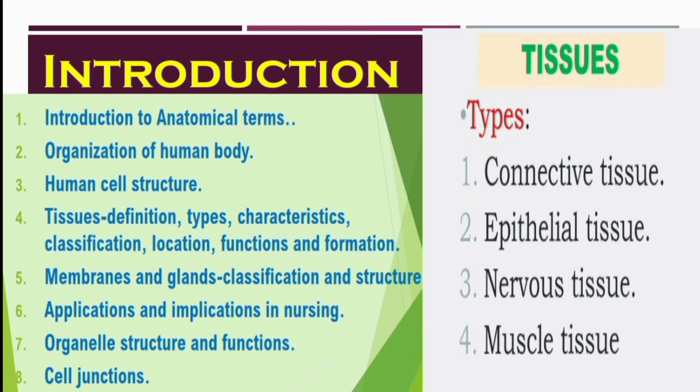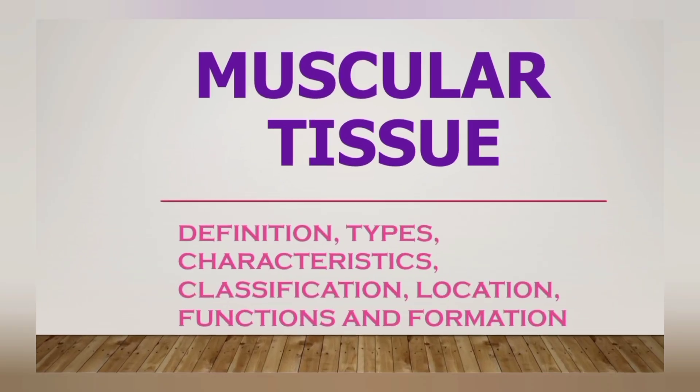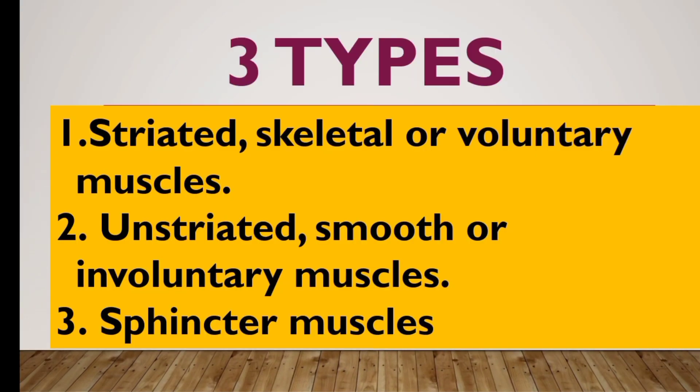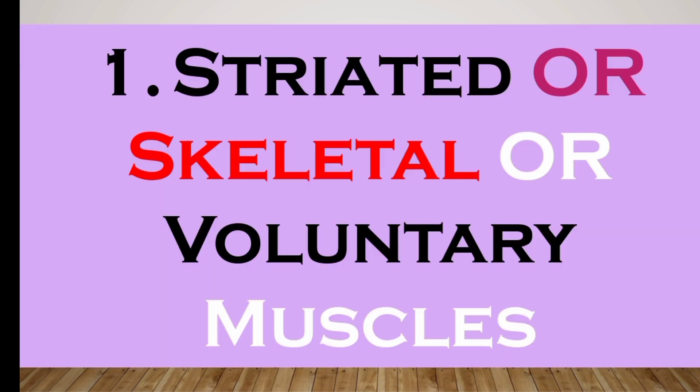There are types of muscle tissues. The first one is striated skeletal or voluntary muscles.